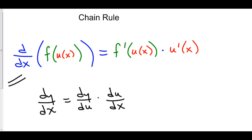It's now time for Chain Rule. Chain Rule says that if we take the derivative of a function with another function inside of it — like an onion — you take the derivative of the outer layer and you keep the inside intact, then you multiply that by the derivative of your inside. In other words, the derivative of f of stuff is f prime of stuff, keeping the stuff intact, times the derivative of the stuff.